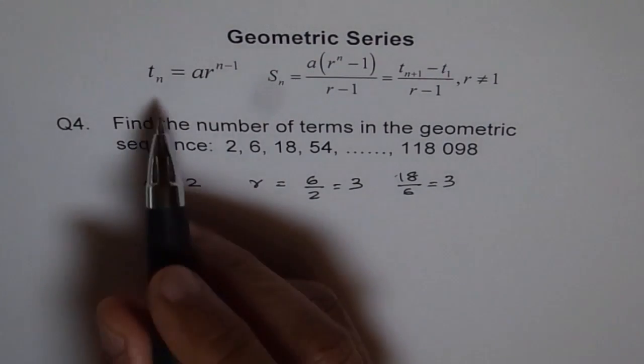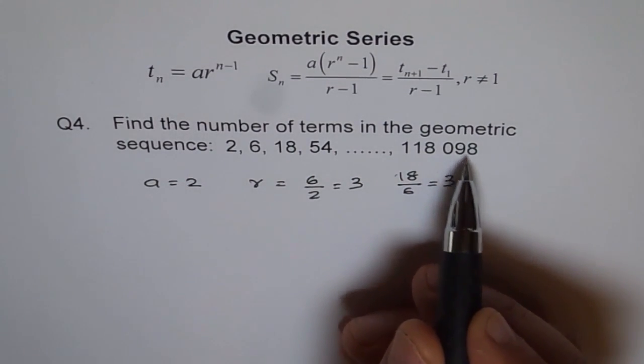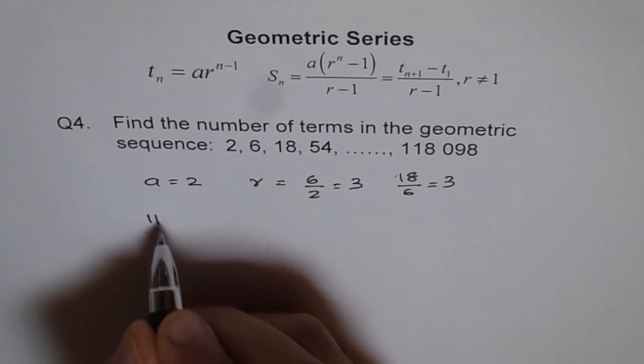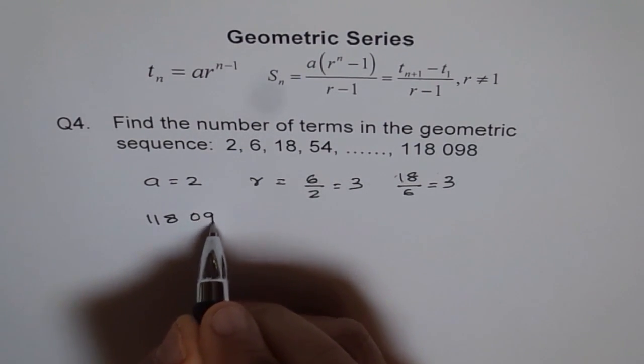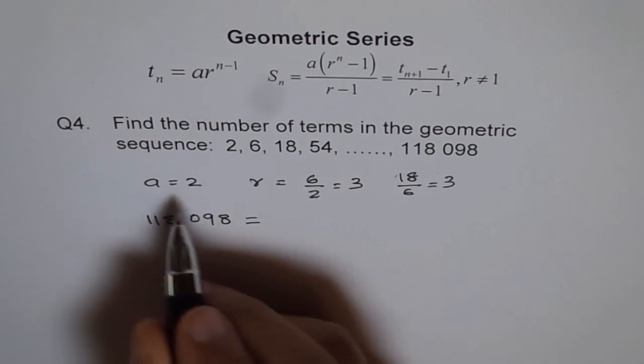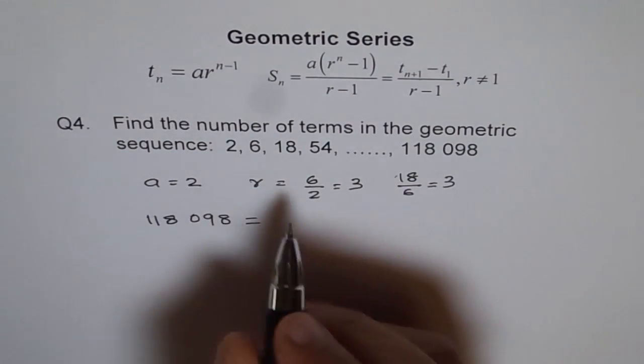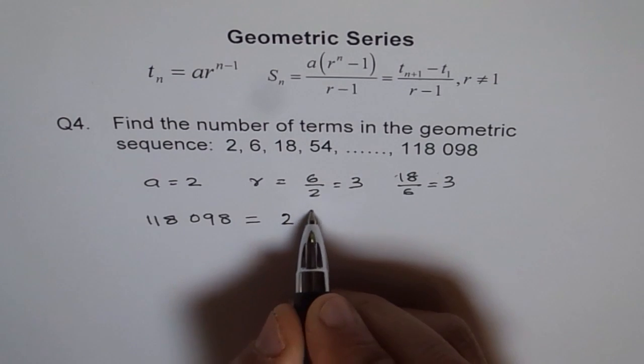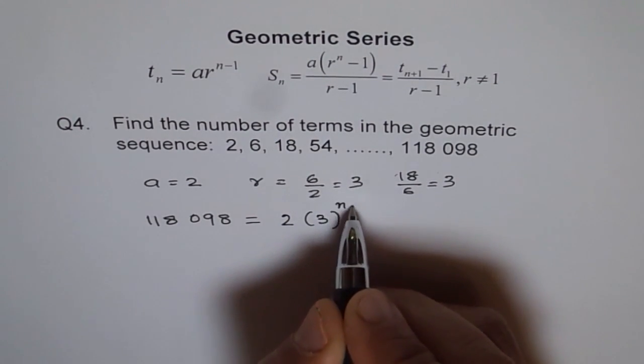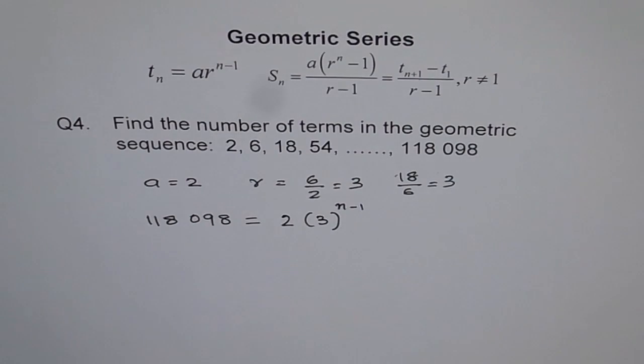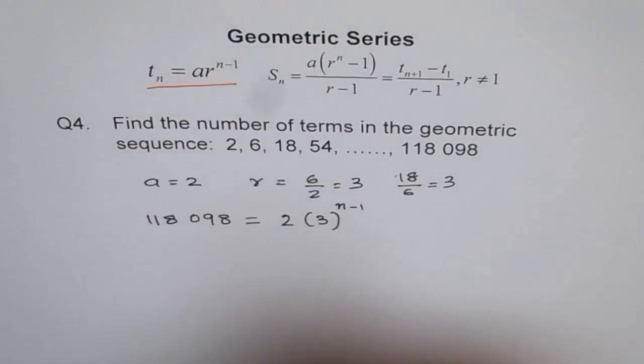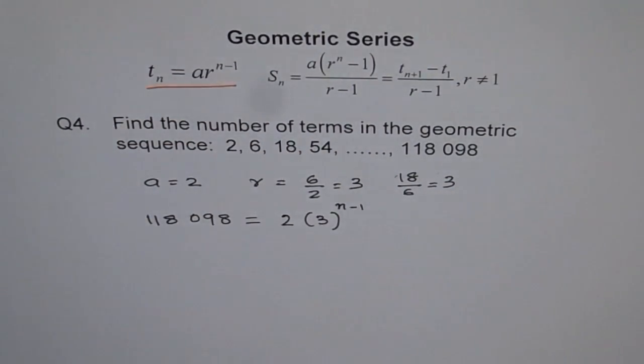And now we know the nth term, which is 118,098. So we'll write 118,098 and equate to this equation and plug the other things in. So a is 2 for us, r is 3 for us, and what we don't know is n, which is in the exponent. So the formula which we are using now is nth term in a geometric series is a times r to the power of n minus 1.